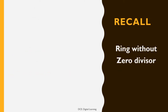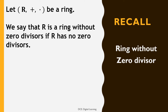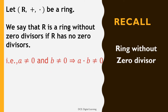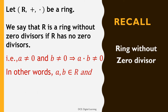Recall ring without zero divisors. Let (R, +, ·) be a ring. We say that R is a ring without zero divisors if R has no zero divisors, that is: a ≠ 0 and b ≠ 0 implies a·b ≠ 0. In other words, if a·b = 0, then a = 0 or b = 0.